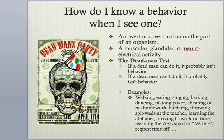How do I know a behavior when I see one? Well, an overt or covert action on the part of an organism is really what we're looking at. We're talking about muscular behavior; we might even be talking about things like glandular behavior or neuroelectrical activity. So a really good test is something that we call the dead man's test. The dead man's test basically has you select a behavior and then ask yourself: could a dead man do it? If a dead man can do it, it probably isn't behavior.